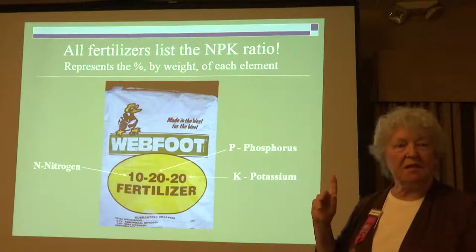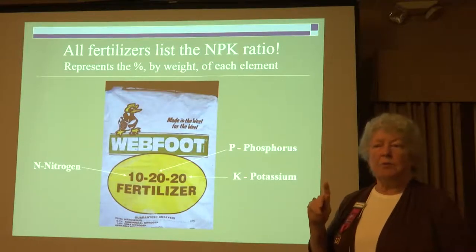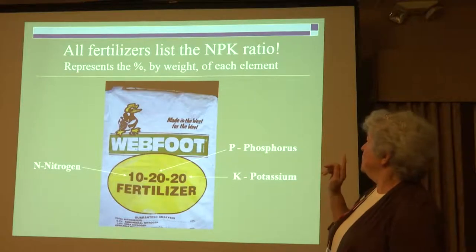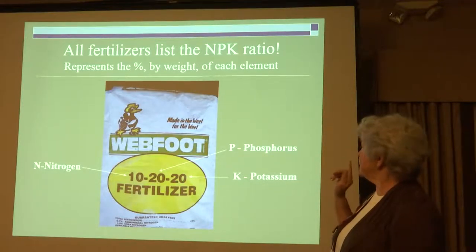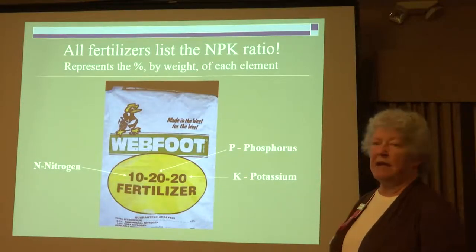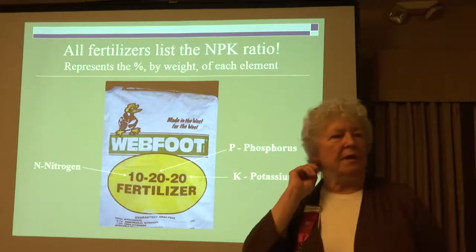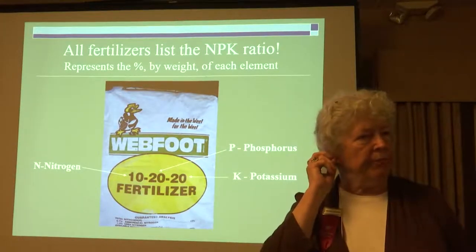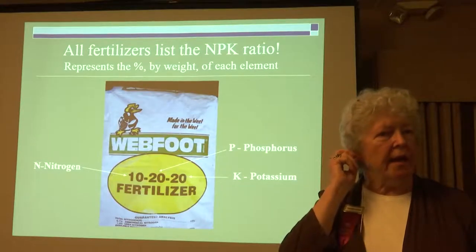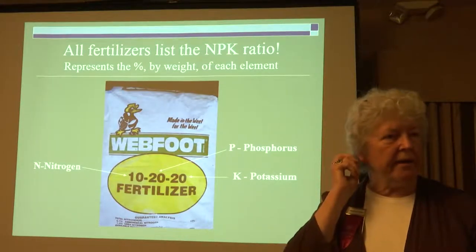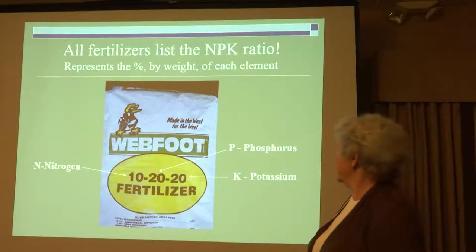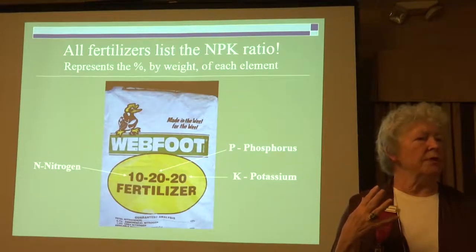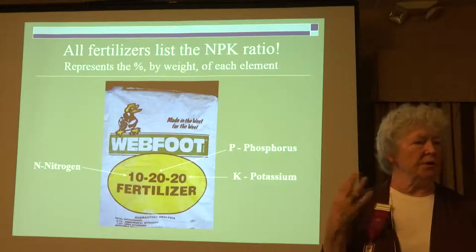Fertilizers always list NPK on the label. N is nitrogen, P is phosphorus, and K is potassium — they use K just to throw you by using Latin. K is for 'kalium.' We don't speak Latin anymore, but those are the three primary nutrients that roses need.